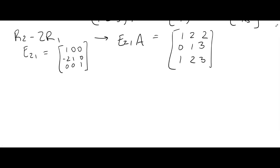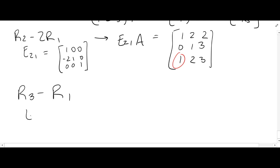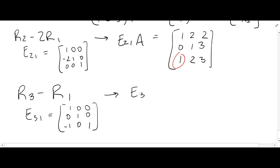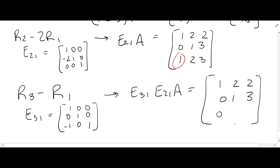Then we reduce the (3,1) entry to zero by doing row 3 minus row 1, using matrix E₃₁. We multiply E₃₁ on both sides and get the upper triangular matrix U.